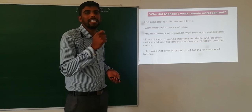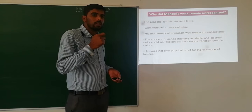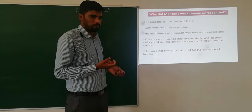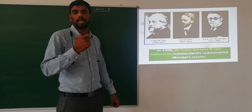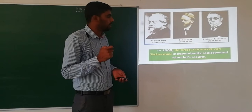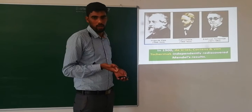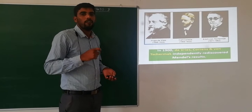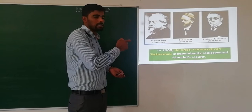Mendel died in 1884 due to kidney failure. After 16 years, the Mendelian work was rediscovered by three scientists: Hugo de Vries, Karl Correns, and Erich von Tschermak. These three scientists independently rediscovered the Mendelian work and concluded the same principles. After this, Mendel was honored as the father of genetics.